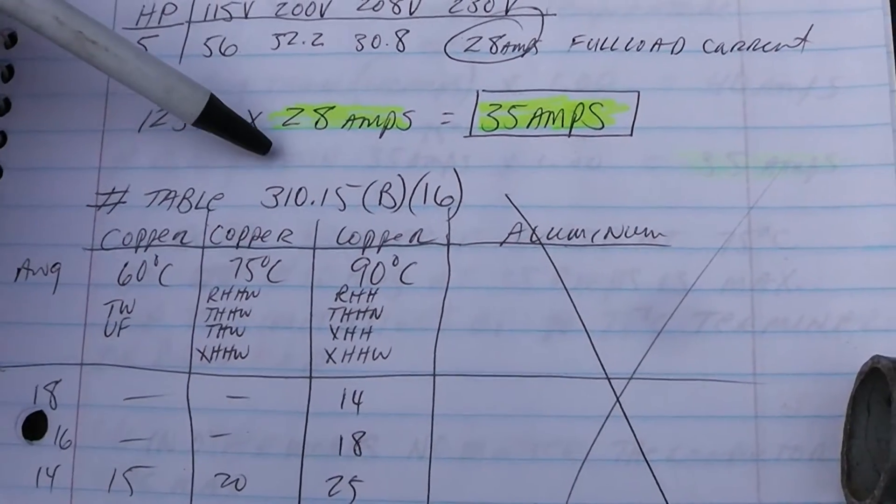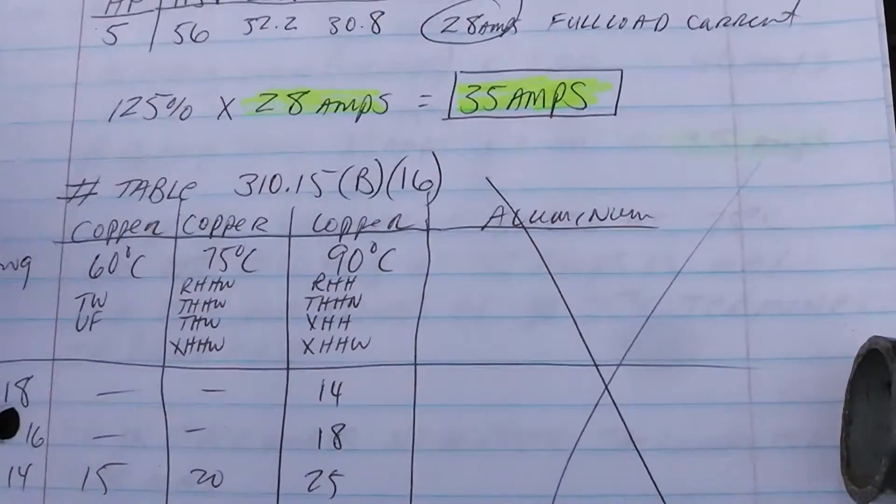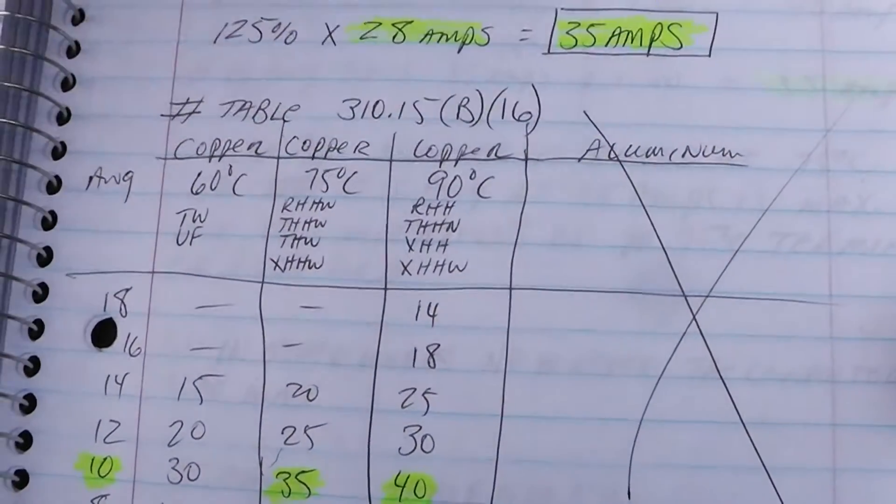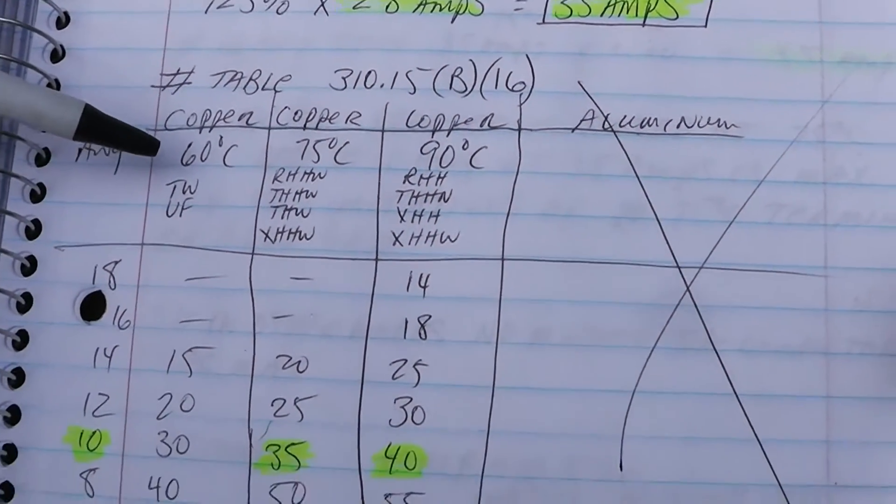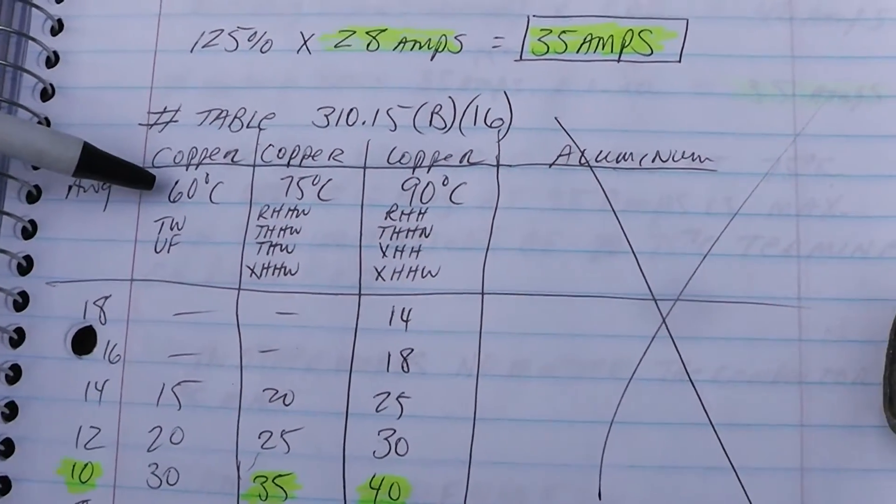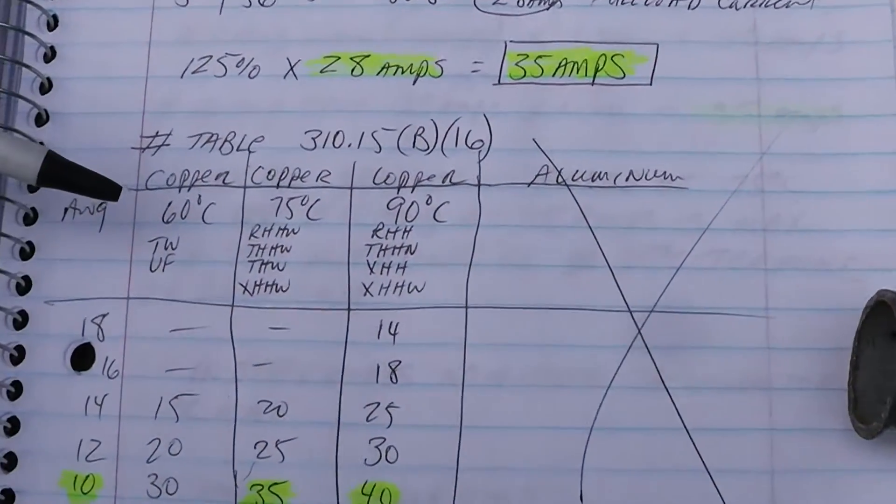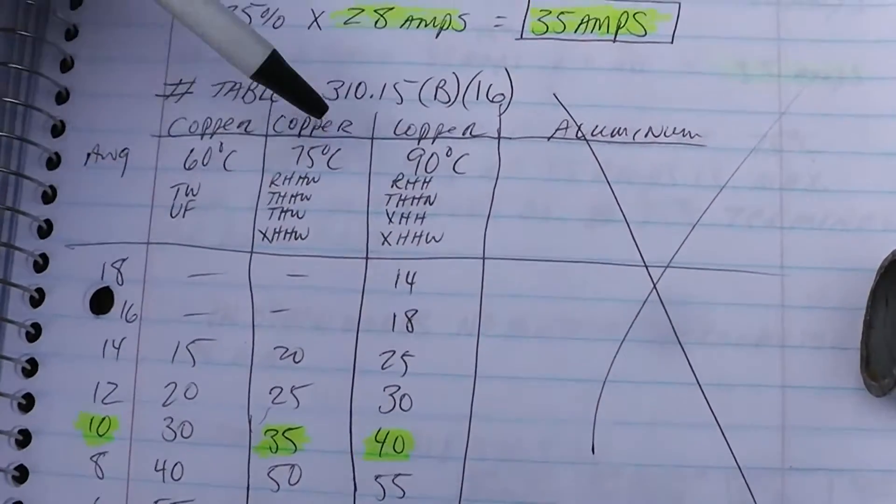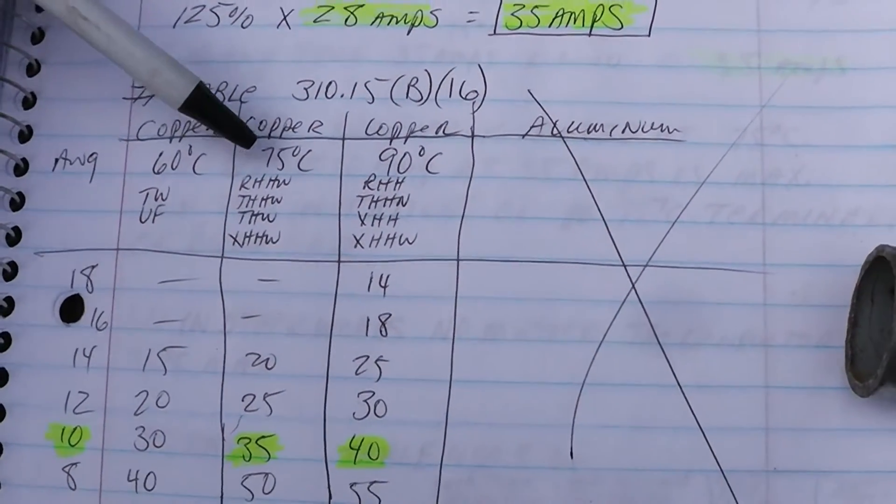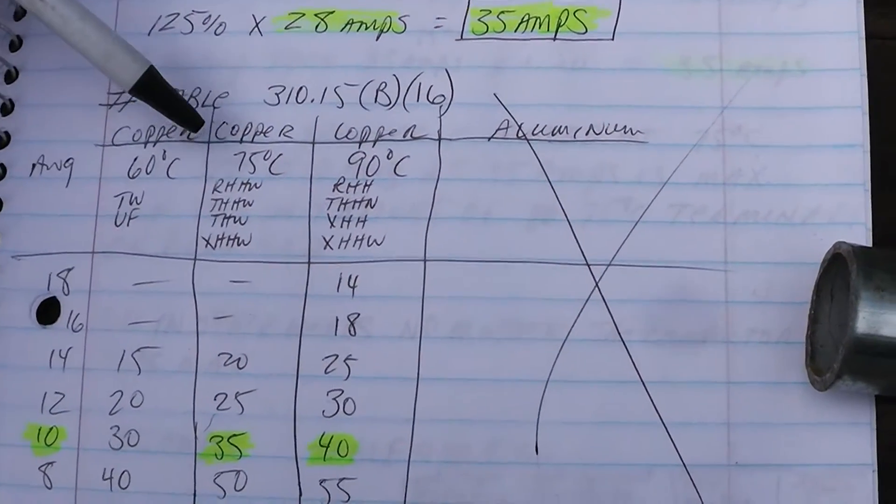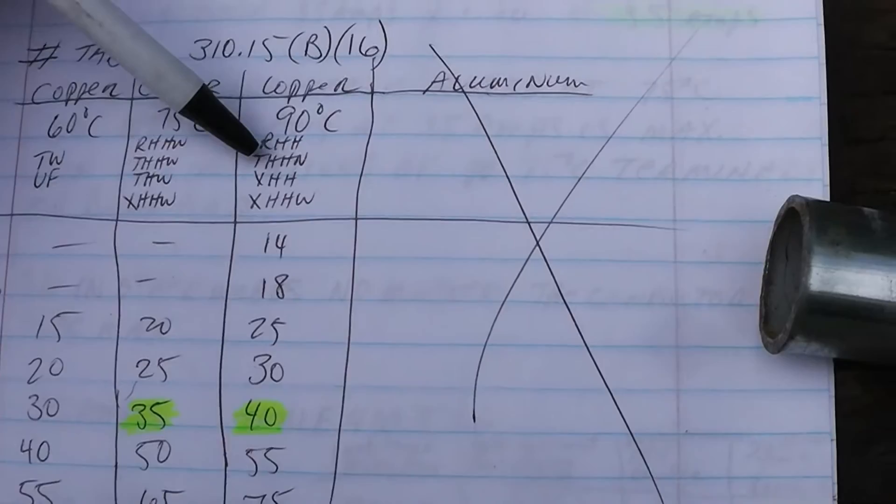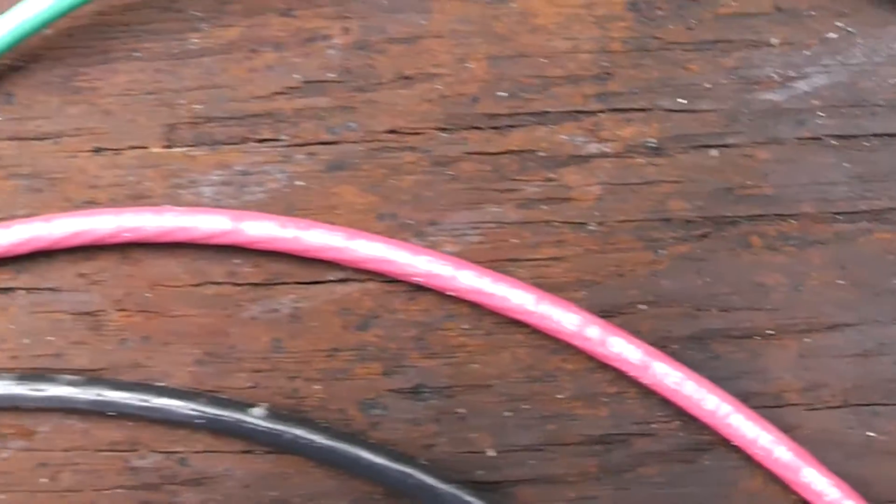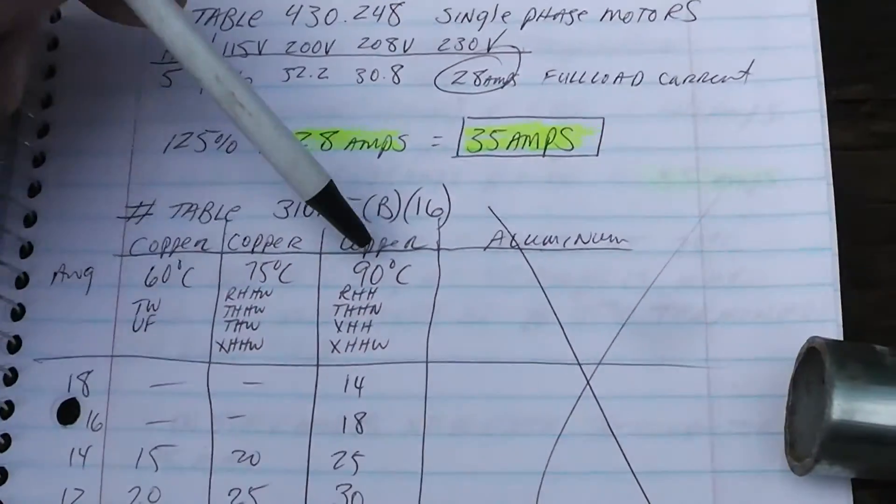How do we figure what size wire we need? If you go in the National Electric Code book 310.15b16, you'll see a table with copper on one side and aluminum on the other. I'm not going to use aluminum. You're not protecting the wire, you're protecting the insulation on the wire - the wire is going to take a whole lot more amperage than these tables have. We go by the temperature rating that the insulation is on the wire.